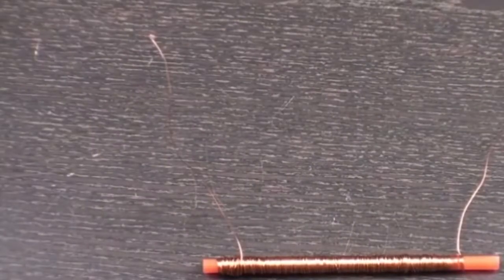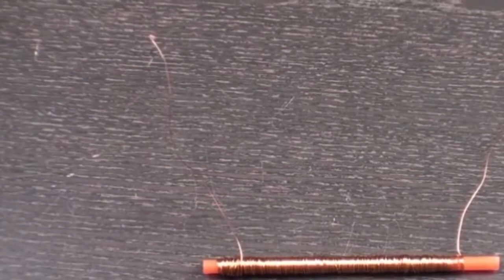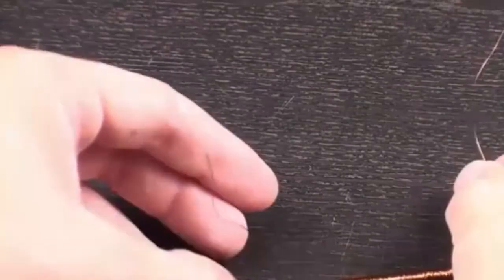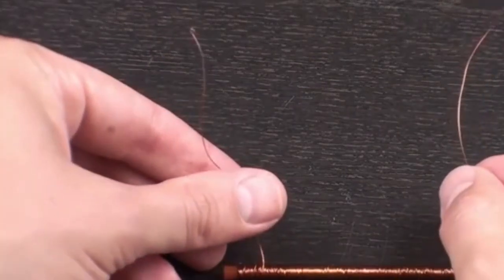Take your time with this step to make sure your windings are tight. Make sure to end your winding at the opposite end of the straw from where you started and cut the wire leaving several inches for a lead.